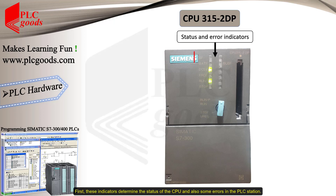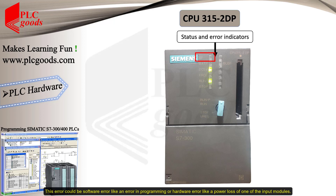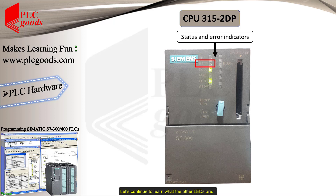Now let's learn about the different parts of the CPU. These indicators determine the status of the CPU and also any errors in the PLC station. On the right side, the BF (Bus Fault) LED indicates there is an error in the system network, such as a bad contact in one of the communication connectors or an address overlap in the network. On the left side, the first LED — SF or System Fault — indicates there is an error in the system, which could be a software error like a programming mistake, or a hardware error like a power loss on one of the input modules.